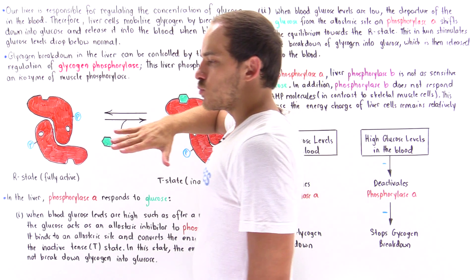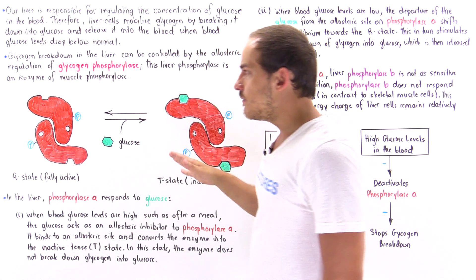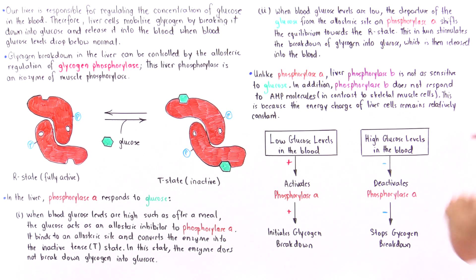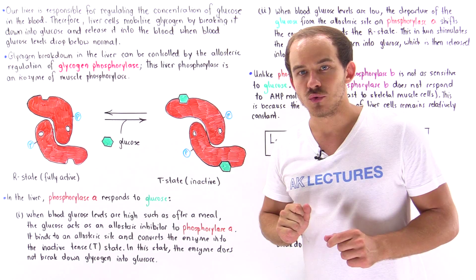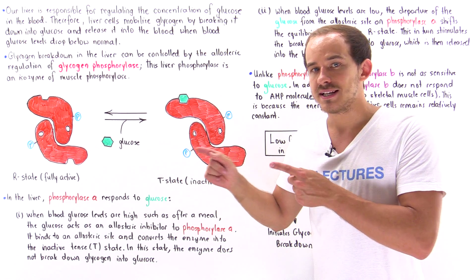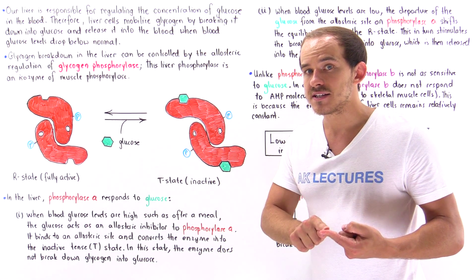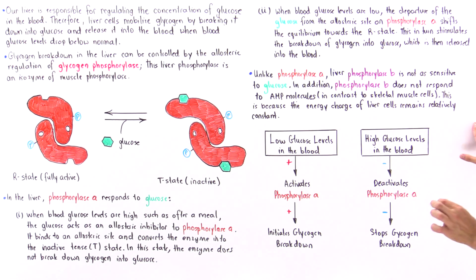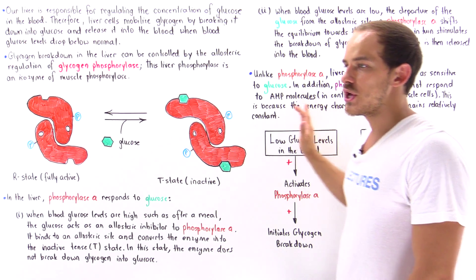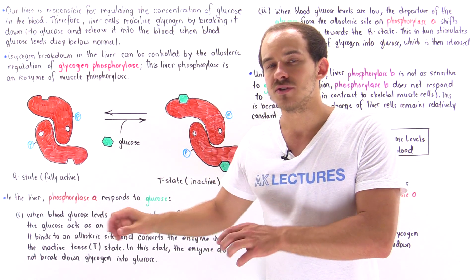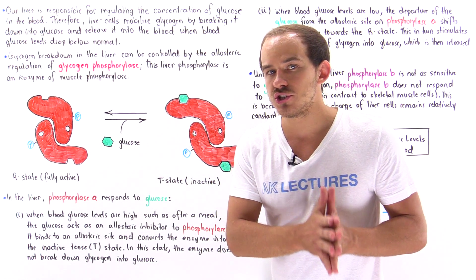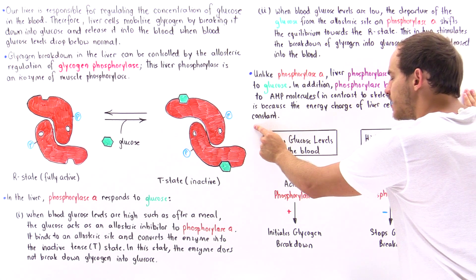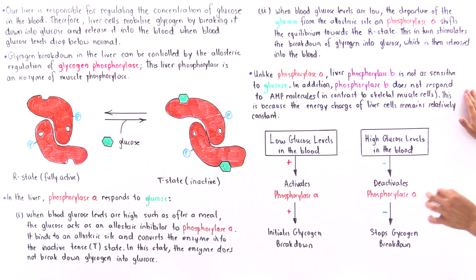Just as in skeletal muscle cells, liver cells also have phosphorylase A and phosphorylase B. However, unlike phosphorylase A, liver phosphorylase B is not sensitive to glucose molecules. Additionally, while AMP is an allosteric activator of phosphorylase B in skeletal muscle cells, liver phosphorylase B does not respond to AMP. This is primarily because, unlike skeletal muscle cells, liver cells do not experience significant changes in cellular energy charge — the energy charge inside liver cells remains relatively constant, so AMP does not affect phosphorylase B.